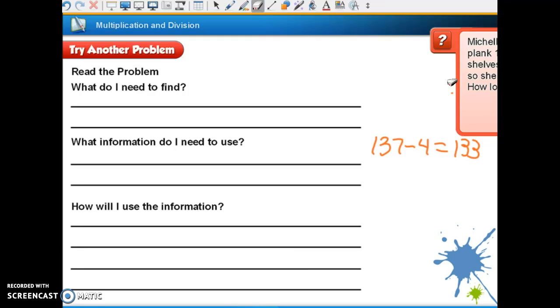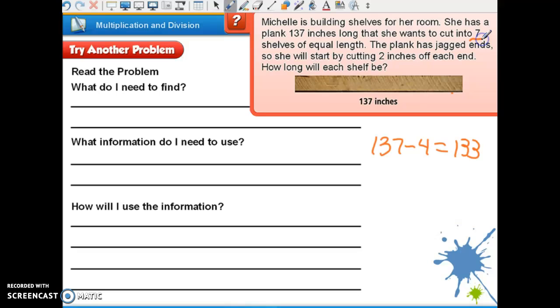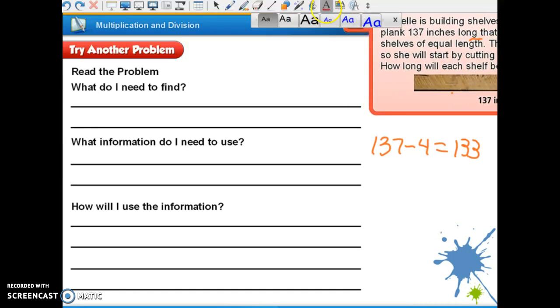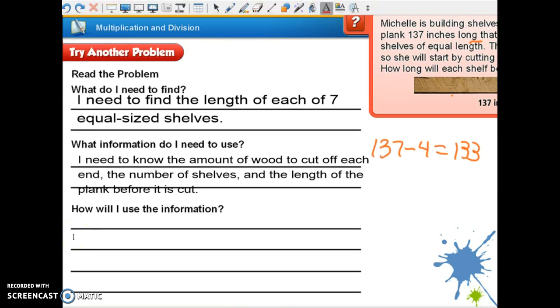What do I need to find? She's going to make seven shelves. So you need to find the length of each of the seven equal-sized shelves. And I'll put that up in a typed box. So I need to find the length of each of the seven equal-sized shelves. So I need to know the amount of wood to cut off each end, which was two inches, right? The number of shelves, which was seven. And what was the wood to begin with? 137 inches.